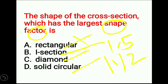Diamond has a shape factor of 2, and solid circular is 1.69 (approximately 1.7). According to the question, the shape of the cross-section with the largest shape factor is diamond. The correct answer is option C - diamond. To summarize: rectangular is 1.5, I-section is 1.12 to 1.15, diamond is 2, and solid circular is 1.7.